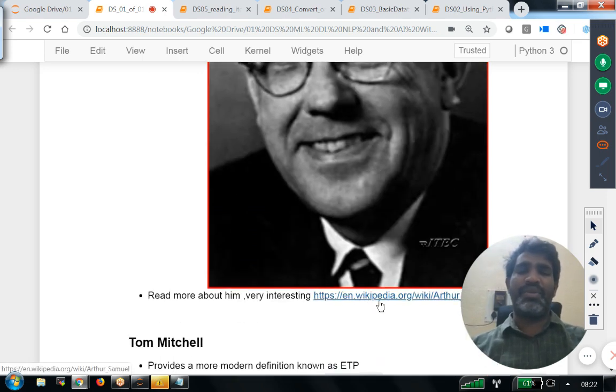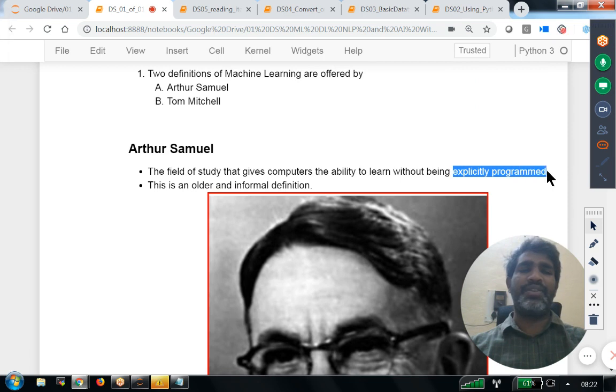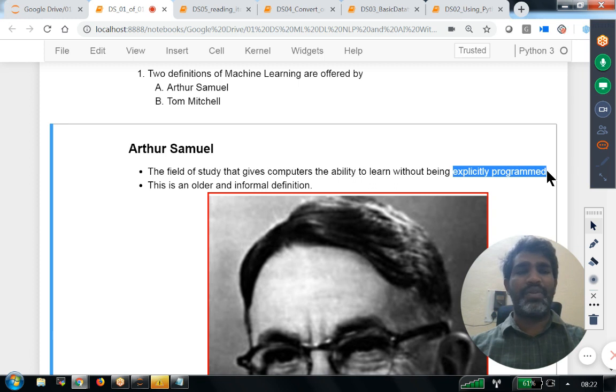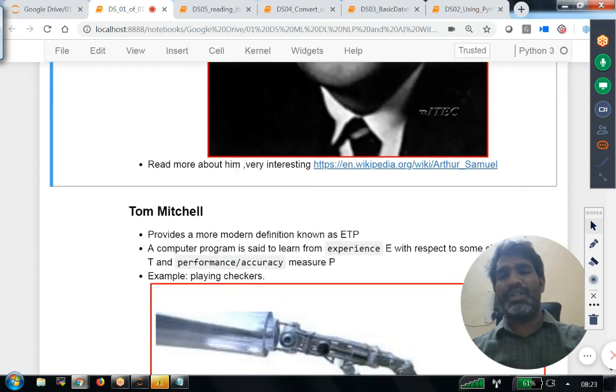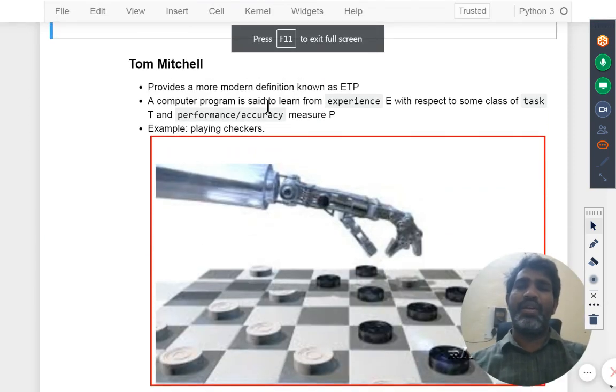That's what Arthur is trying to tell. This is an older and informal definition. You can read more information about this personality from Wikipedia. So, the major point is: are you going to write each and every line, or up to a certain extent you write and the rest the machine will learn?